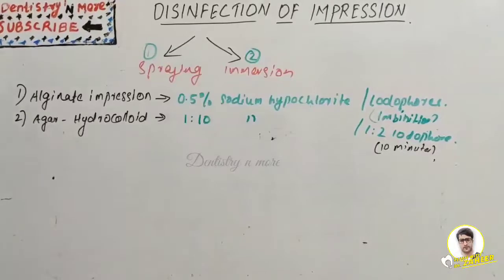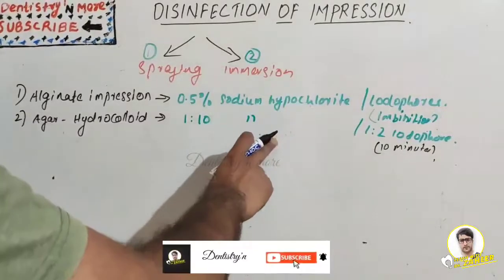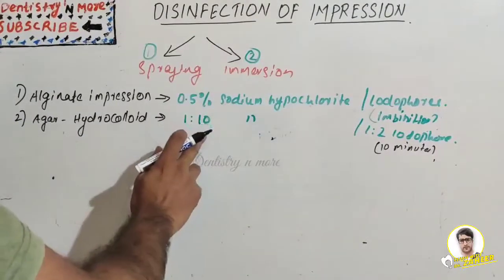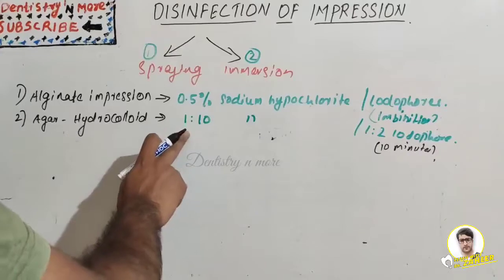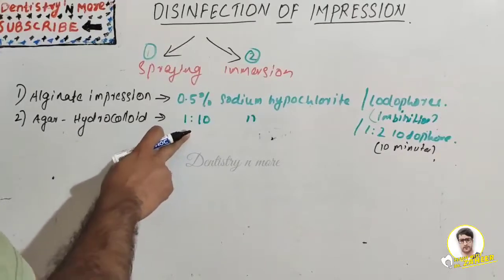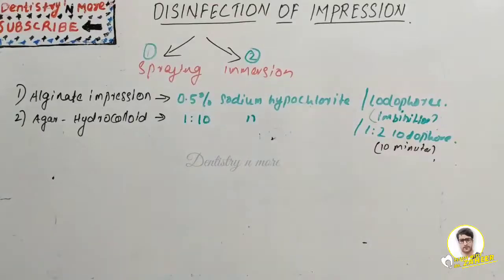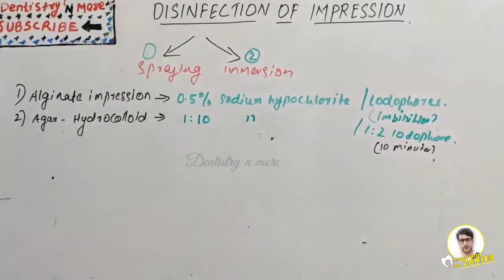For agar hydrocolloid, we use the same reagents: sodium hypochlorite or iodophore. For sodium hypochlorite, we need to use a dilution of 1:10, and for iodophore, a dilution of 1:2. The recommended immersion time is ten minutes.